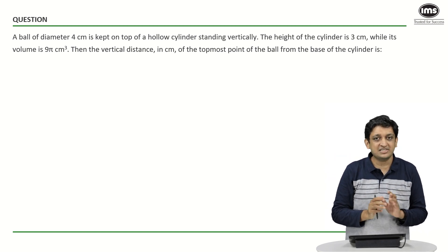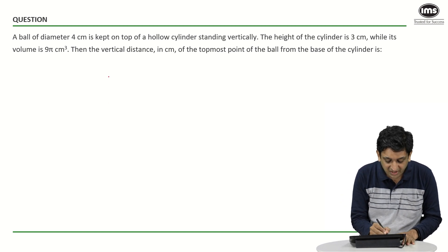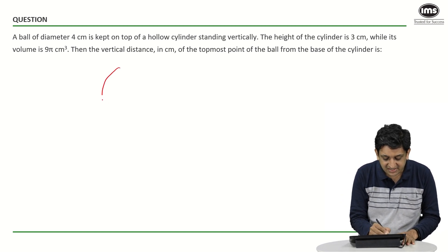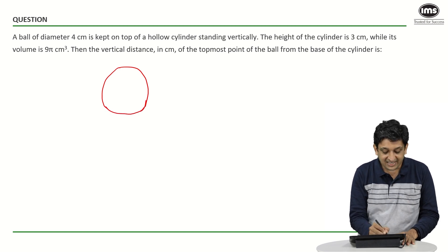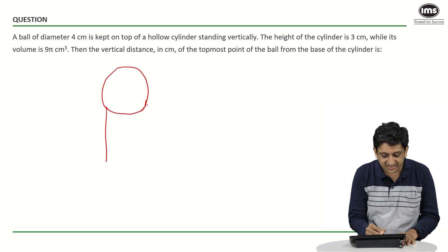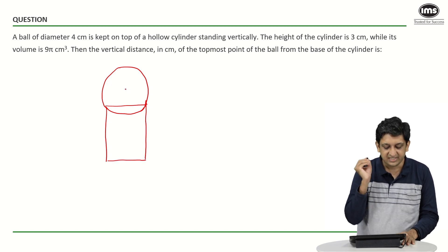So if I just want to represent it through a diagram what I can do is I will just try to put a sphere first. So let us say this is the sphere that we are going to put in the cylinder and let us say we are talking about this cylinder. I am talking about a cross section. Let us say I am talking about a cross section of a cylinder which looks like this.